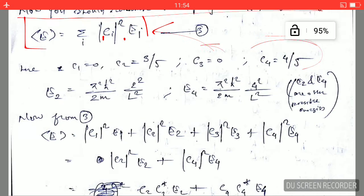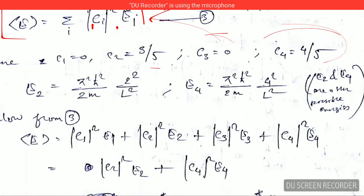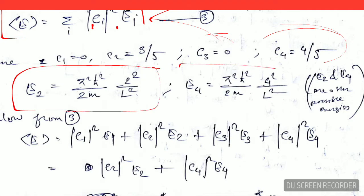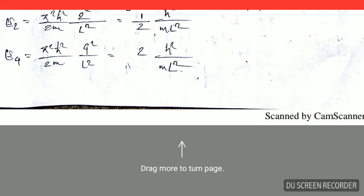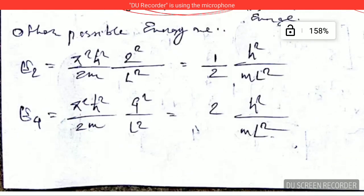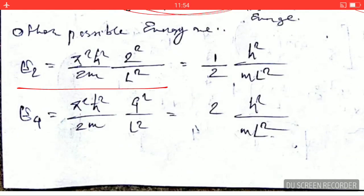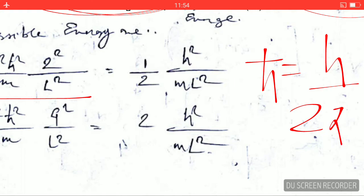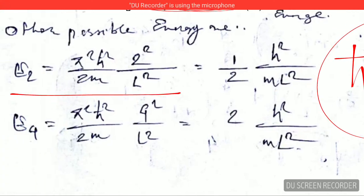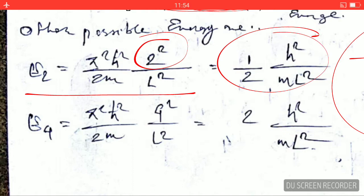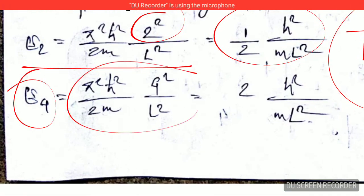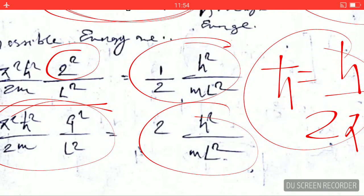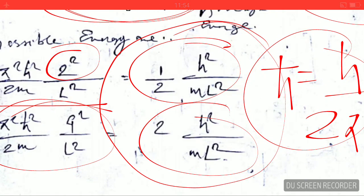As already explained, we calculated E₂ and E₄ in the process. These are the two possible outcomes of a single energy measurement. Simplifying each and substituting ℏ = h/(2π), squaring and simplifying the expressions, we arrive at the explicit values for E₂ and E₄ — the two possible energy eigenvalues.